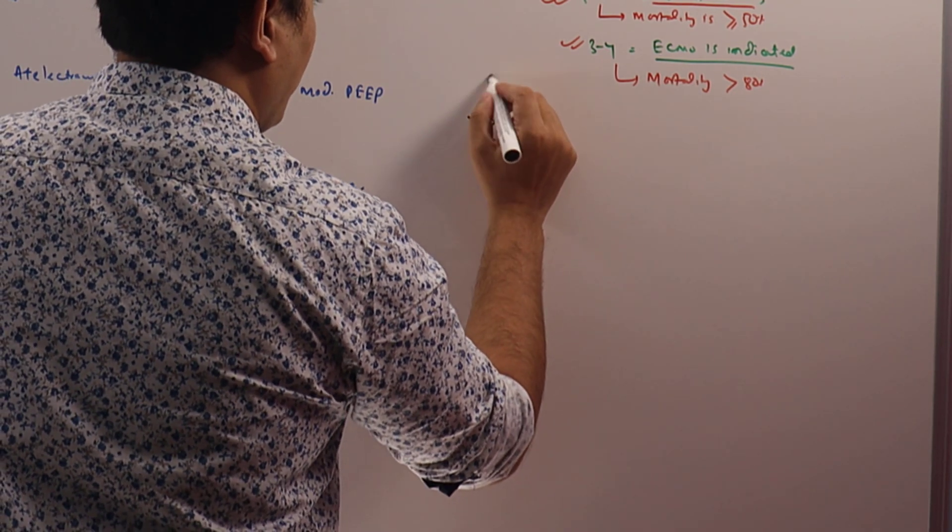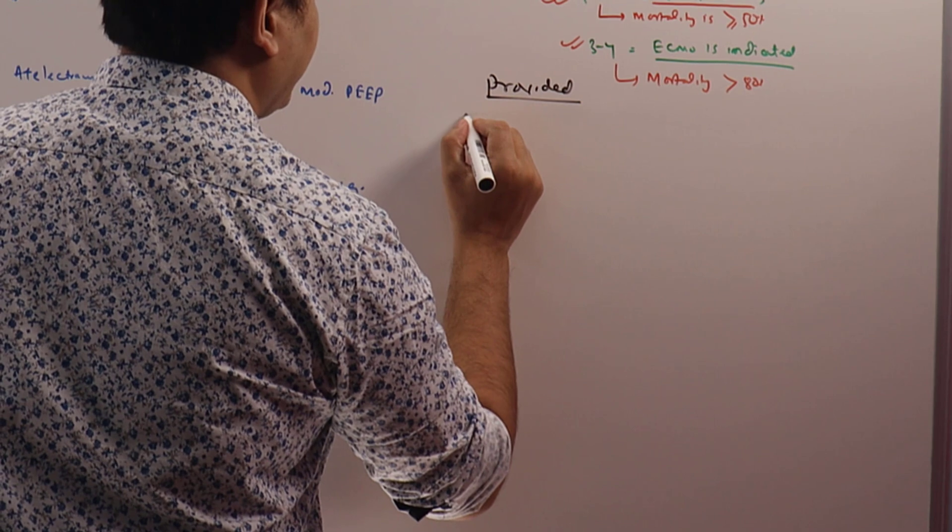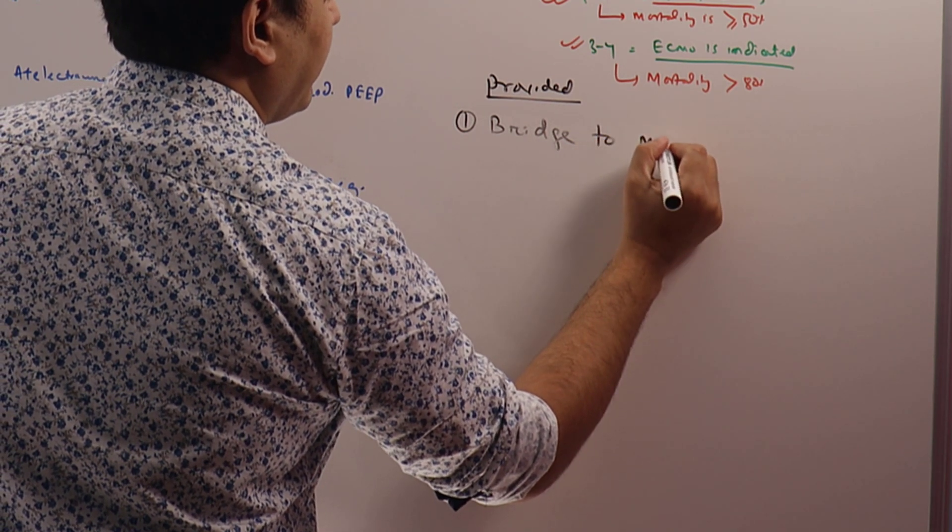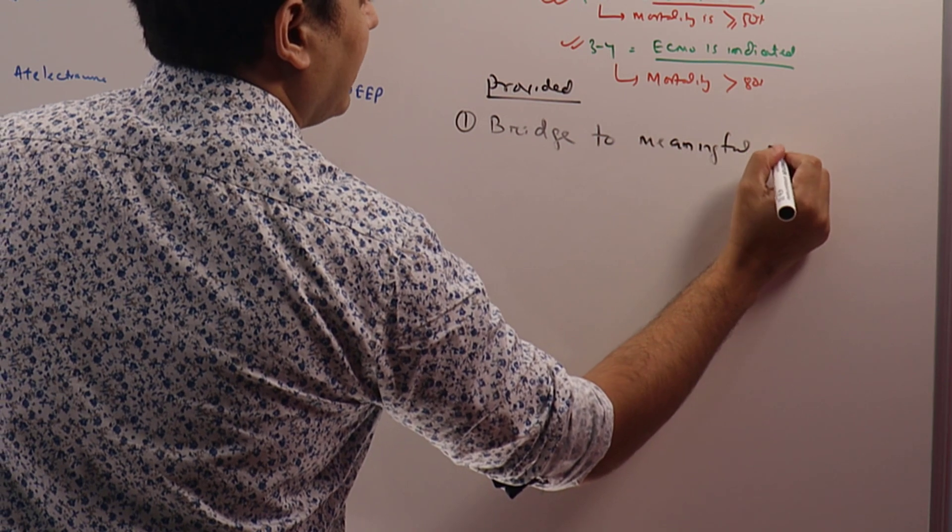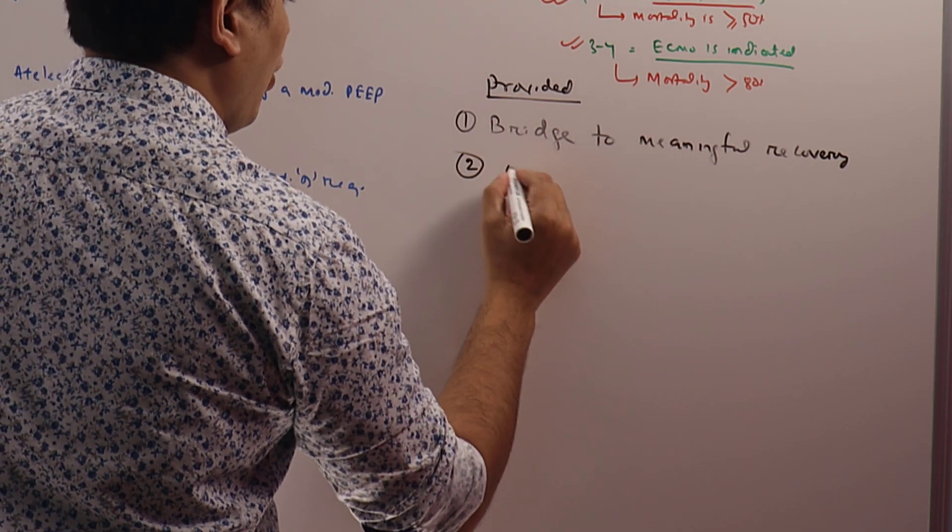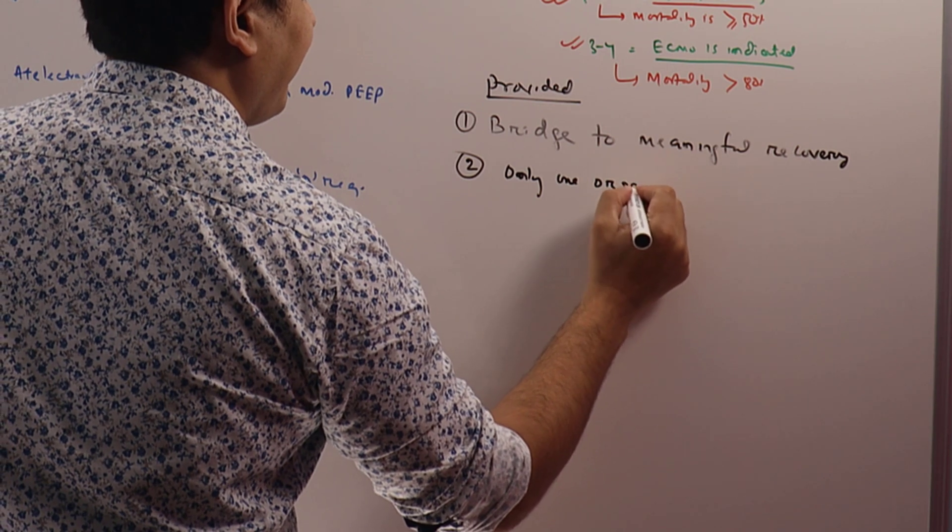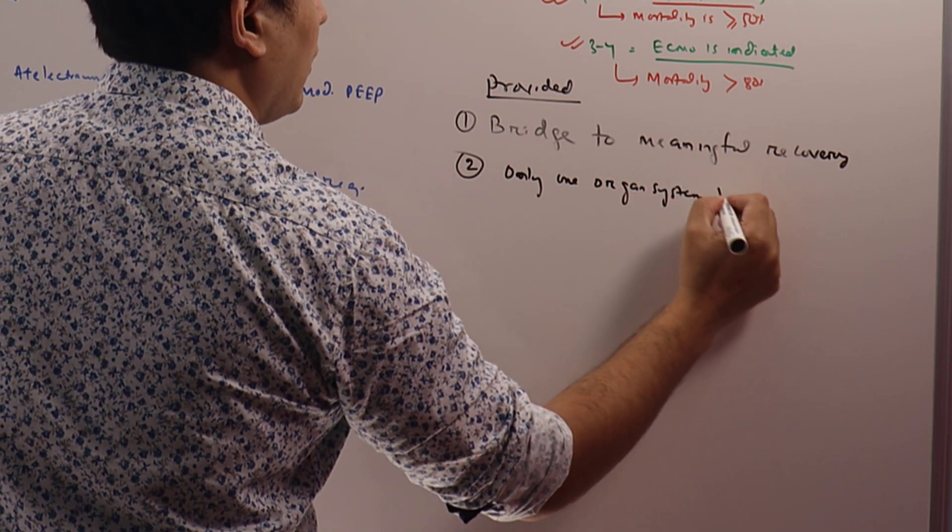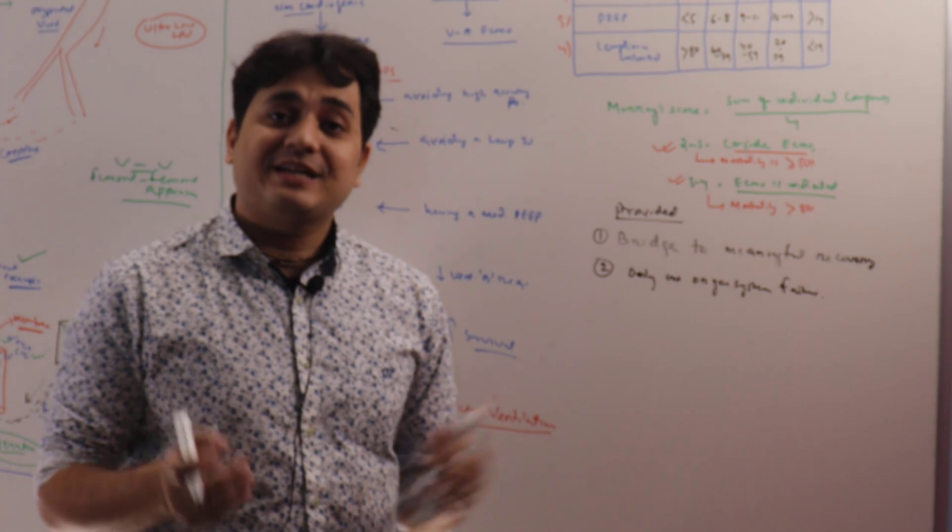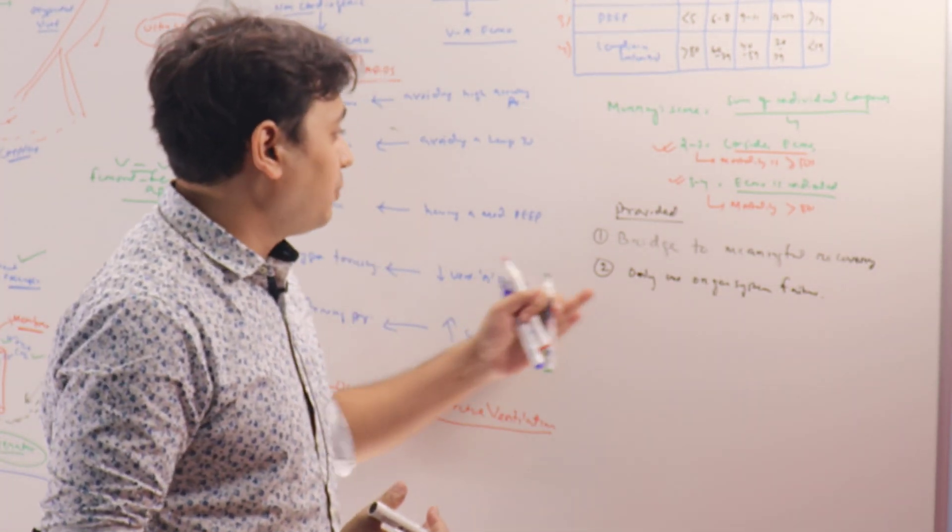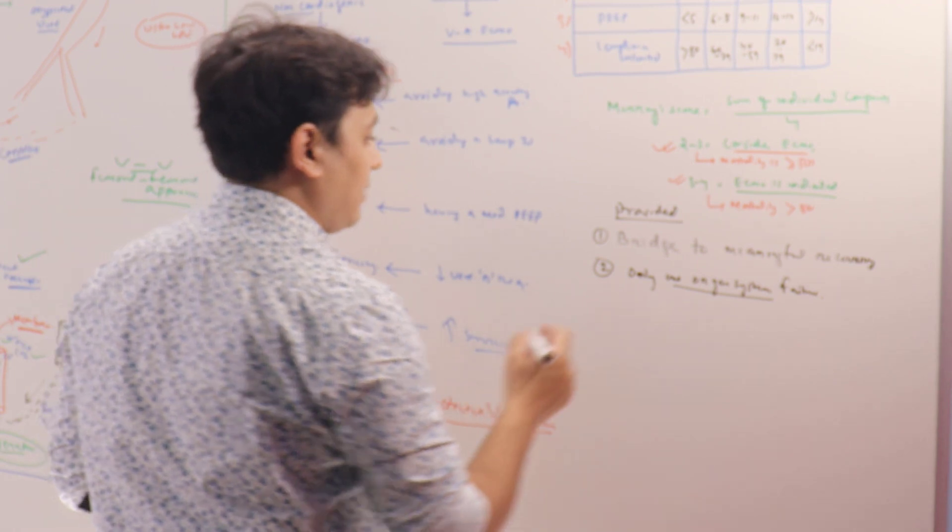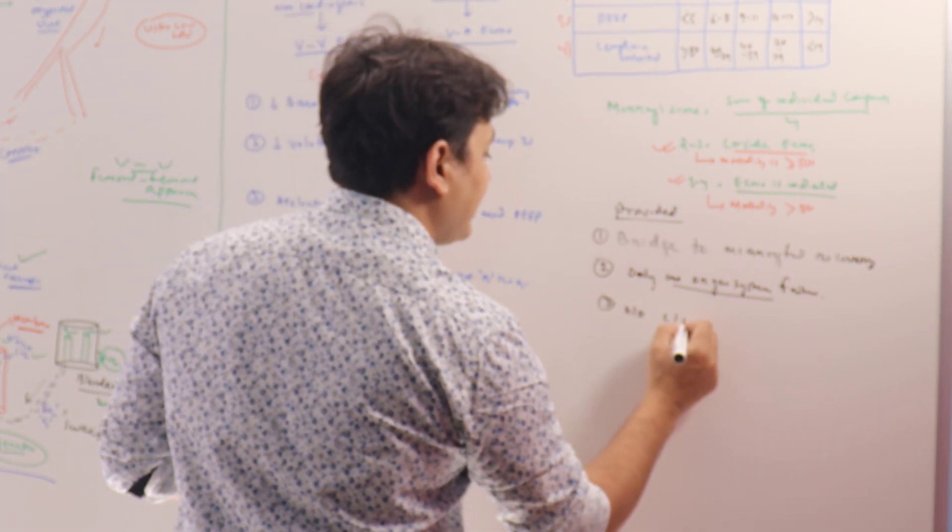This is how you choose your patients for ECMO, provided these important parameters are met. First, provided there is a bridge to meaningful recovery. Second, only one organ system failure—that is, the lung. If the patient is having multi-system organ failure, mortality is even very high, so it's not worthwhile to put ECMO for those patients.